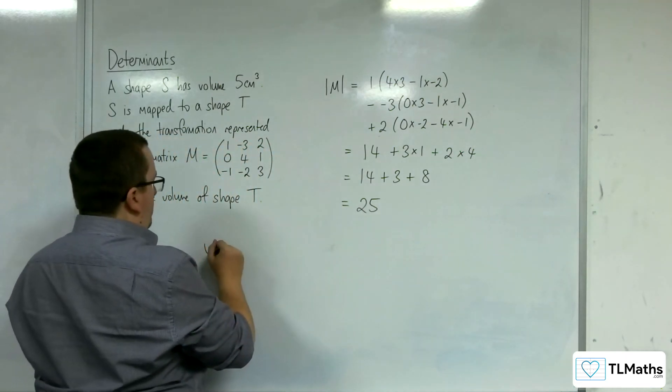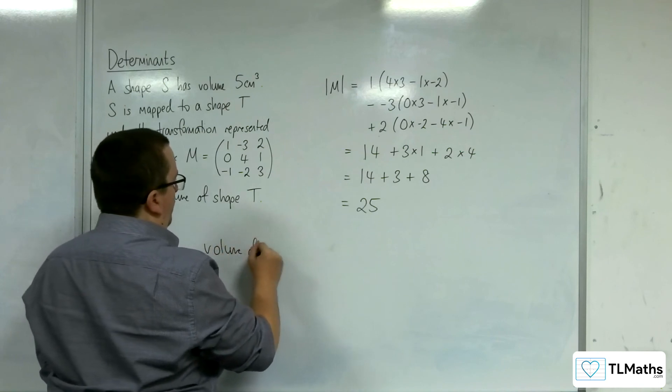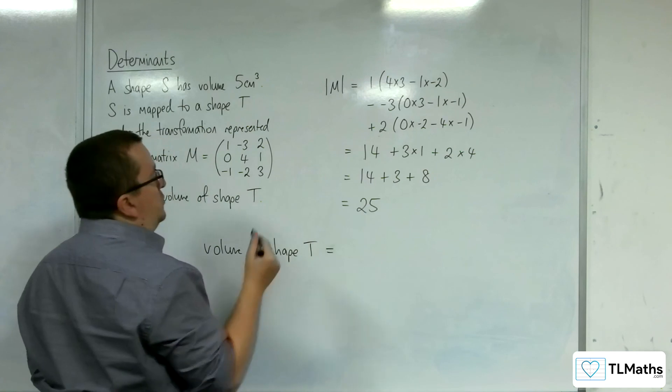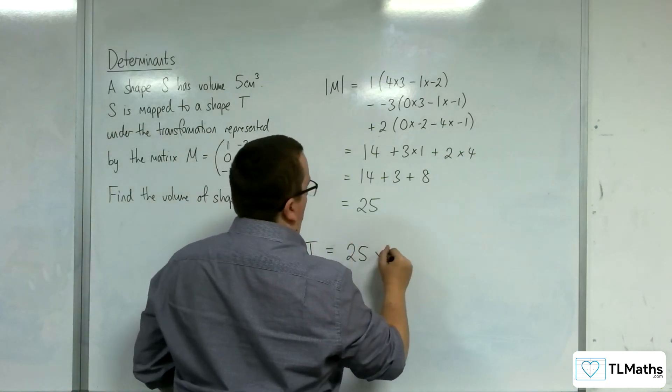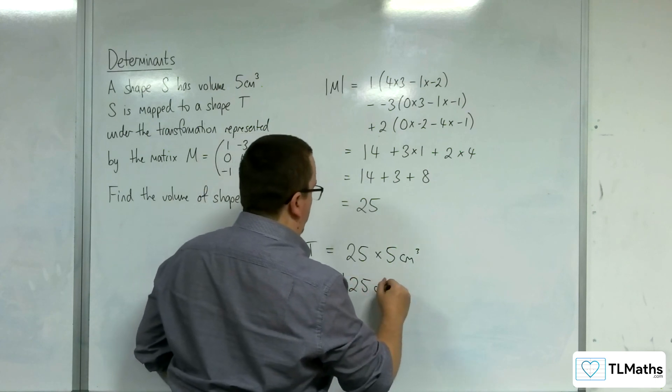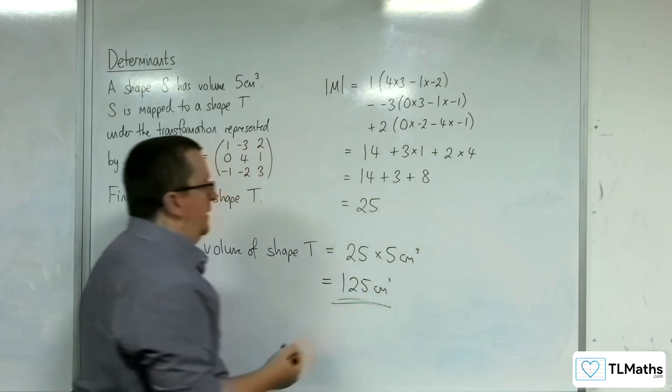So the volume of shape T is equal to 25 lots of the 5 cubic centimeters. And so that's 125 cubic centimeters.